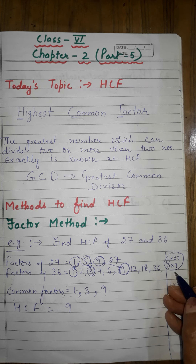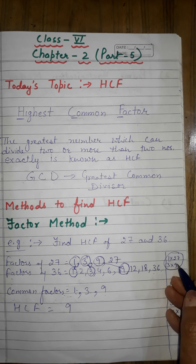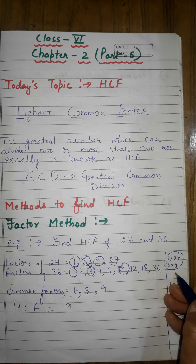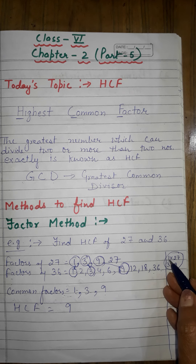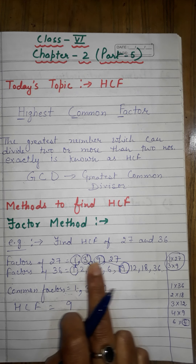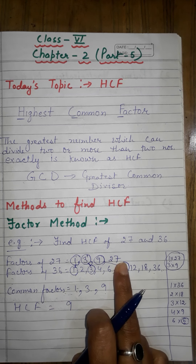Since 9 is already taken, the next factors we find will be repeats of what we already have, so we stop here. The factors of 27 are: 1, 3, 9, and 27.